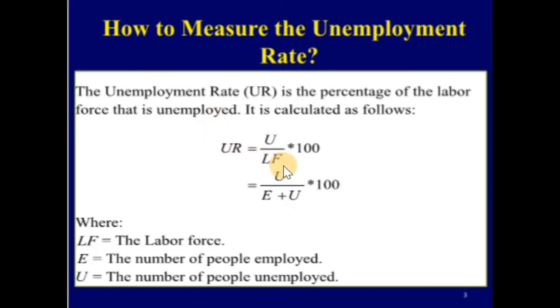Where LF equals the labor force, E equals the number of people employed, and U equals the number of people unemployed.